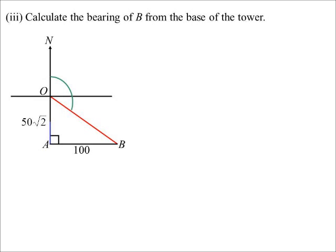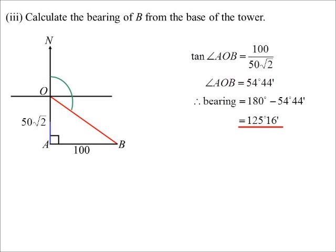So if I just find, well, that's the angle I have to find. But if I find AOB, subtract from 180, we'll get our answer. So AOB 54, 44. Subtract from 180. And there we go. 125, 16.